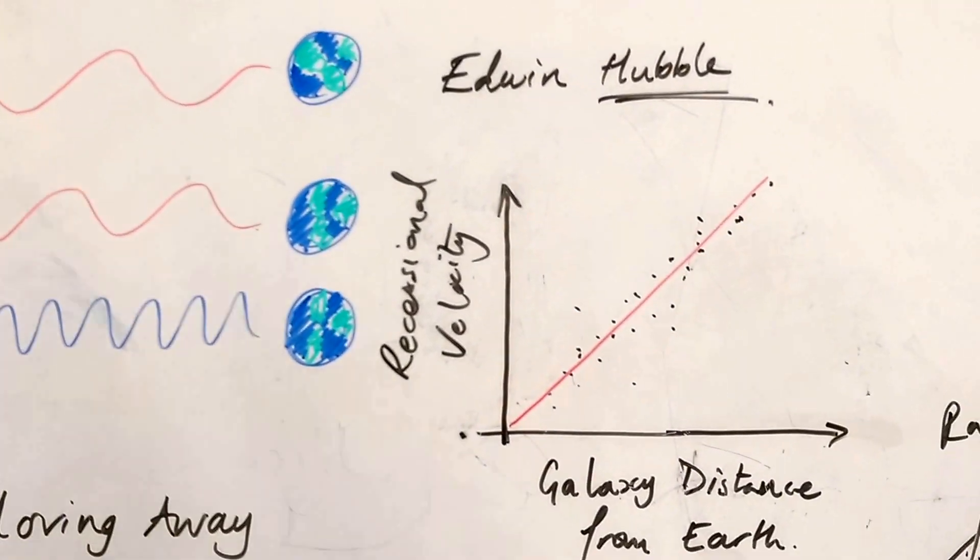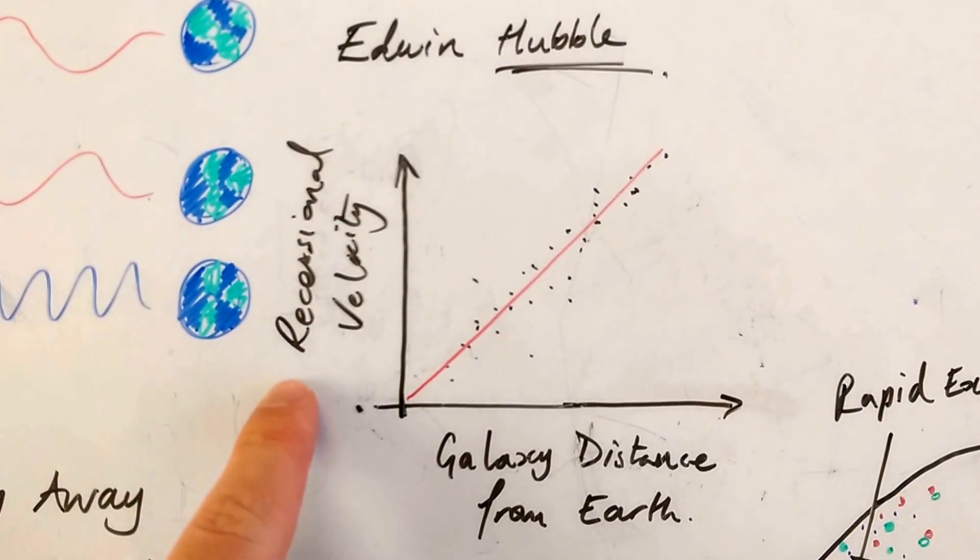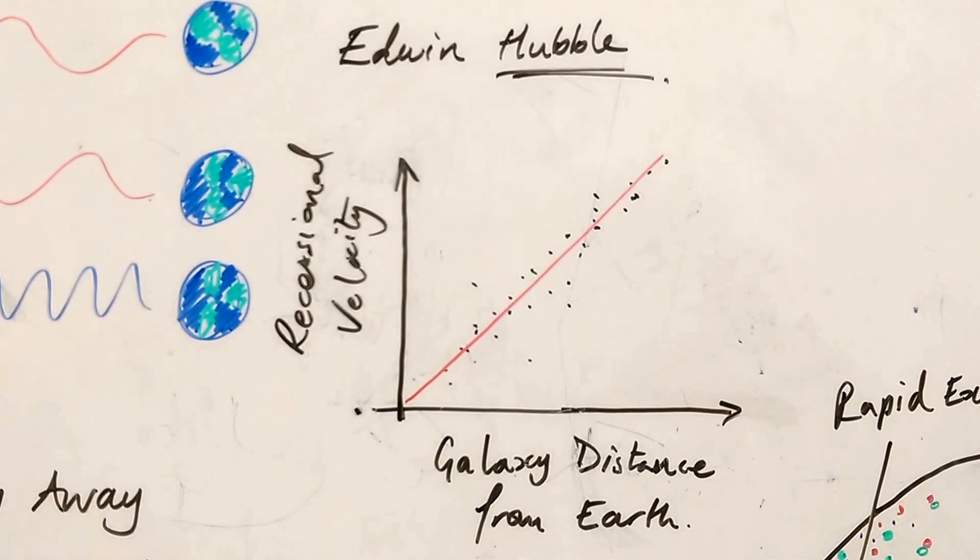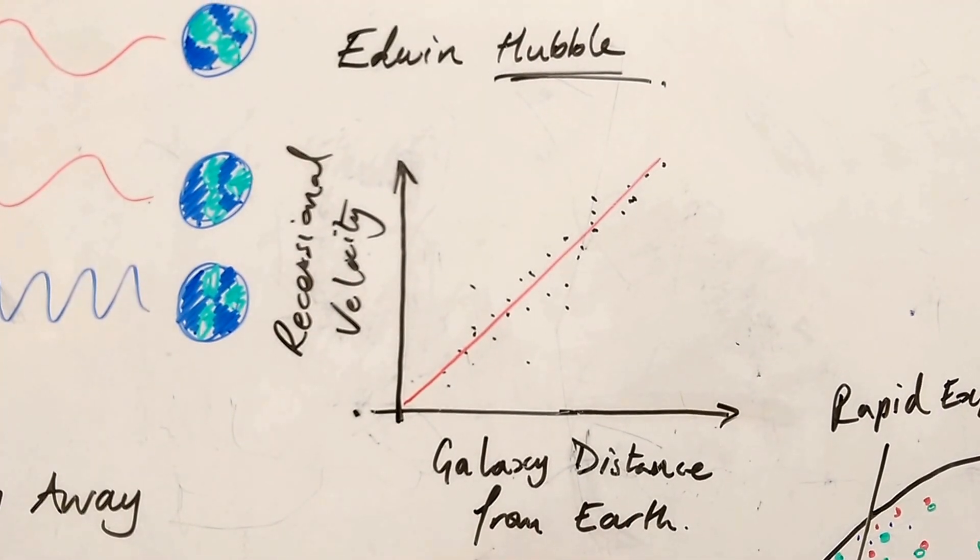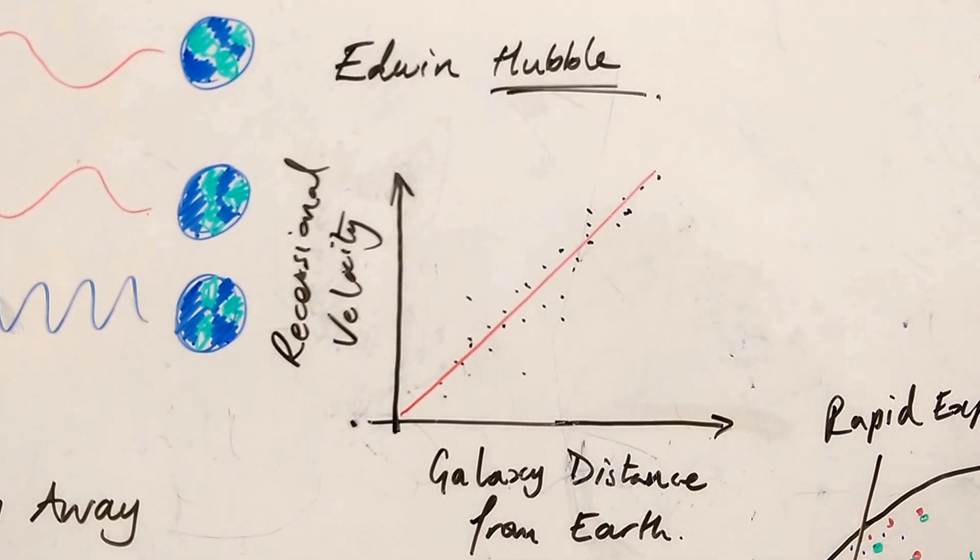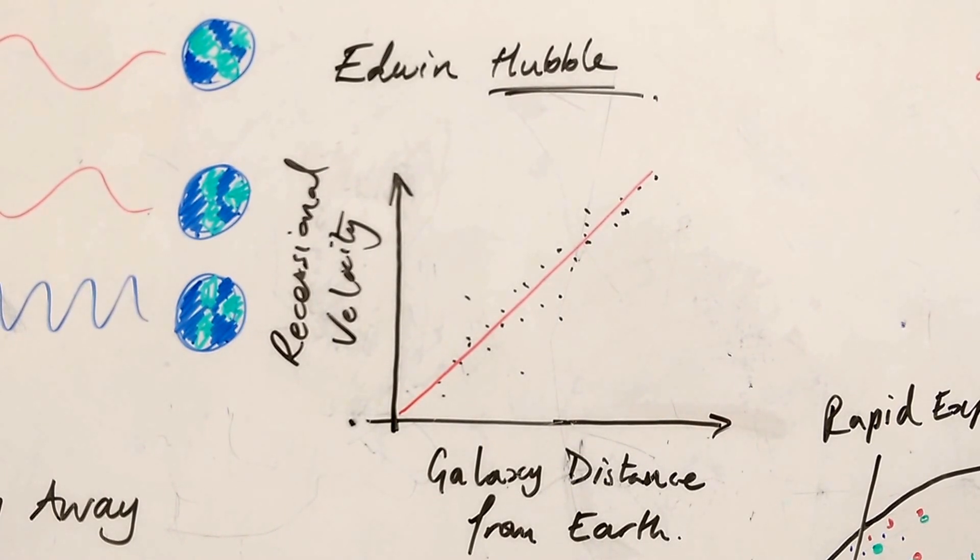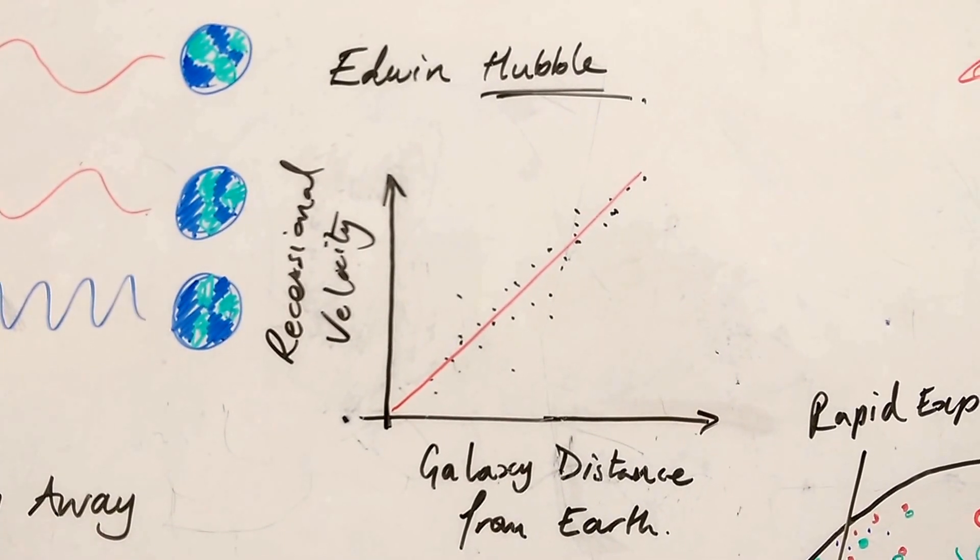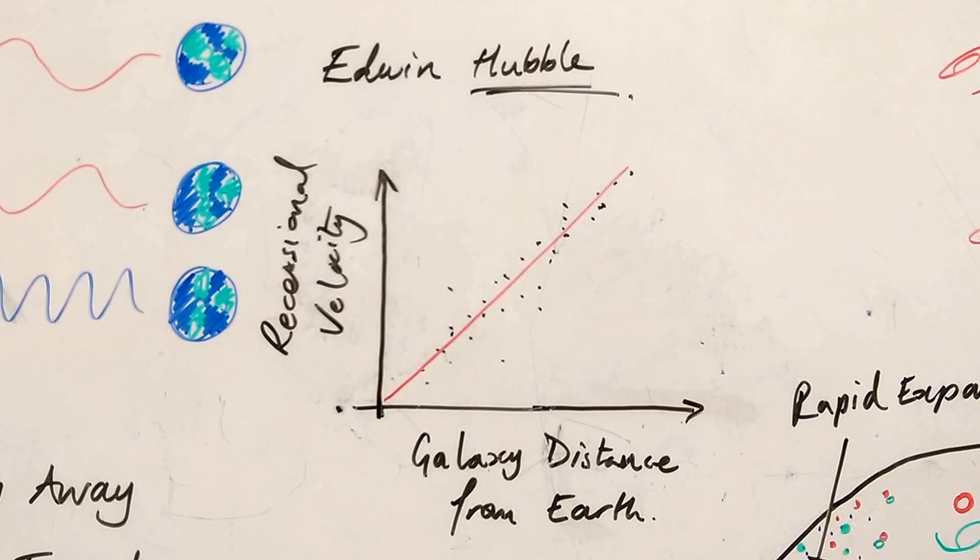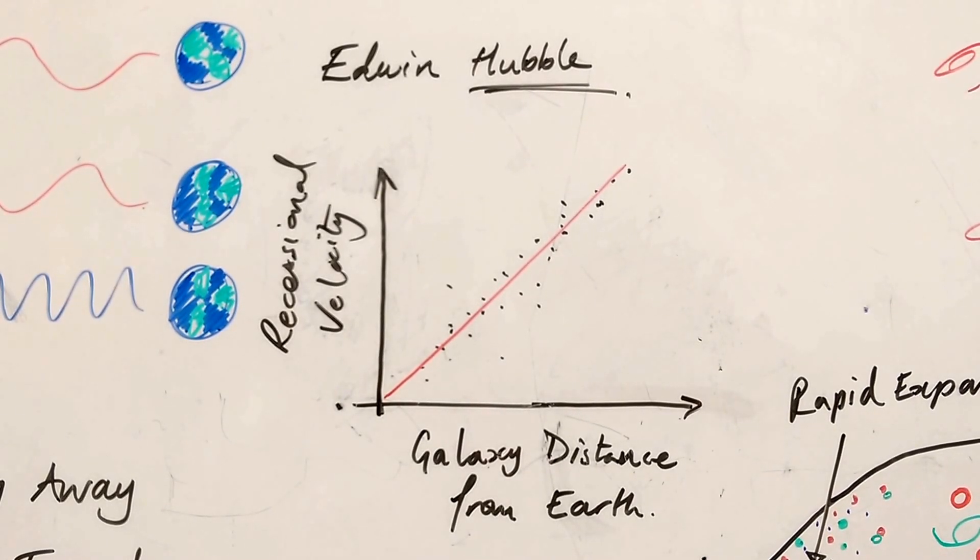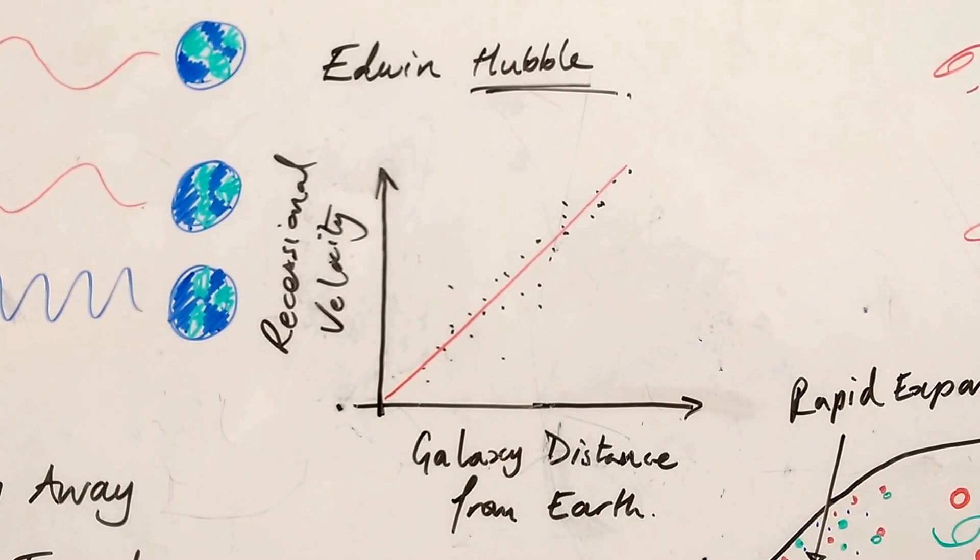He measured not just their speed, their recessional velocity, how fast they were going away from us, but also the distance from Earth. And he found that the further away the galaxy was from Earth, the faster it was moving away from us. And indeed, every galaxy that he looked at, bar about three, were moving away from Earth.